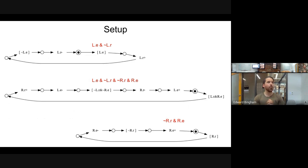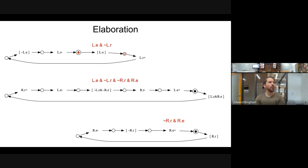Now we can start walking through the simulation. The first step is to figure out which transitions are enabled. Looking at the state, L.E is high, so the guard waiting for L.E to be high is enabled — the token is allowed to pass through it. Since the guard isn't a real transition, we extend the token to L.R up, which is enabled but has not fired yet. Meanwhile, the token waiting on L.R and R.E is not enabled because L.R is currently low.